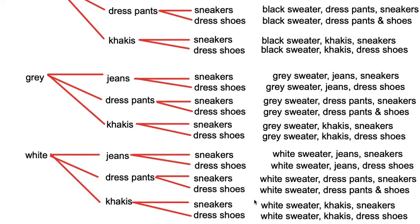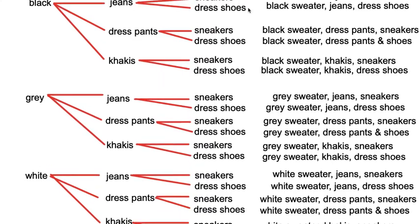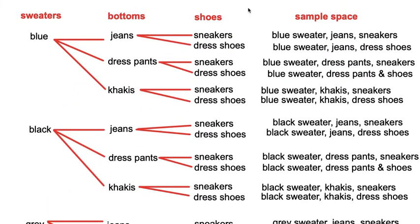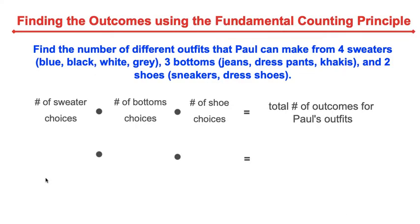So in total, if you count carefully, in the sample space we have 24 choices. You could take the time to make a tree diagram to find all 24, or you can use the fundamental counting principle and simply multiply the number of choices of each event together to find 24 outfits.